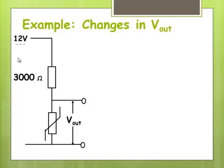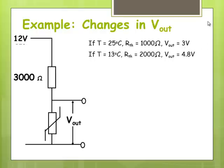So let's say here we've got 12 volts. We've got a resistance of 3000 ohms and our thermistor there. If the temperature is 25 degrees, the resistance of the thermistor would be 1000 ohms and that means we would get V out as 3 volts. If we reduce the temperature to 13 degrees, the value of the resistance of the thermistor doubles and V out increases to 4.8 degrees. And if T is reduced to 6 degrees, the value of the resistance of the thermistor is 3000 ohms. V out increases to 6 volts.